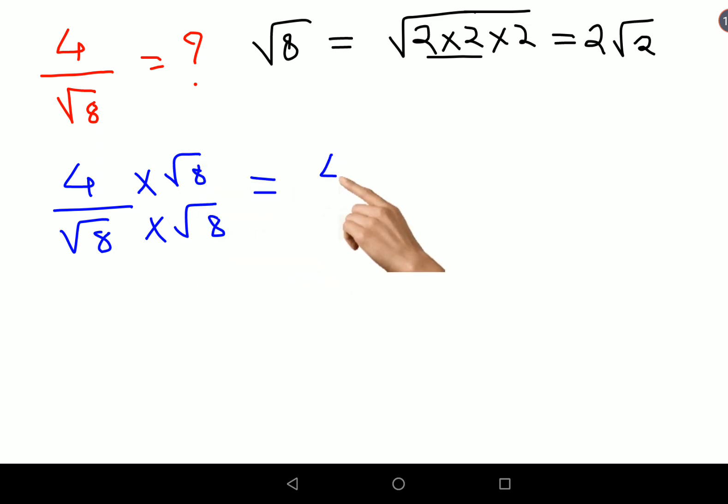So this is getting cancelled, and now here you can put the value of 2 root 2. So this will get you 4 times 2 root 2 upon 8, which simplifies to 2 root 2 upon 2.